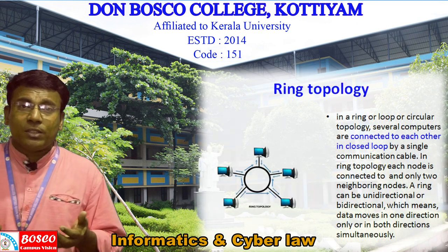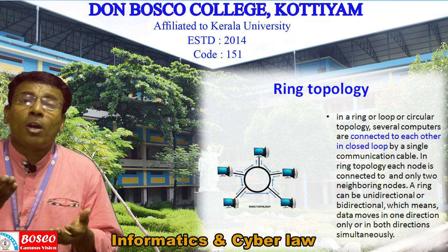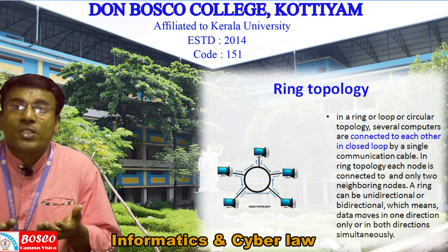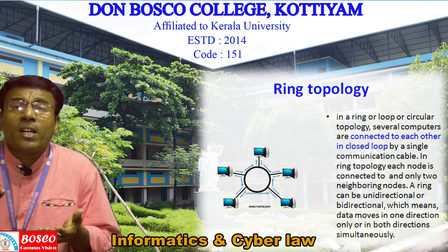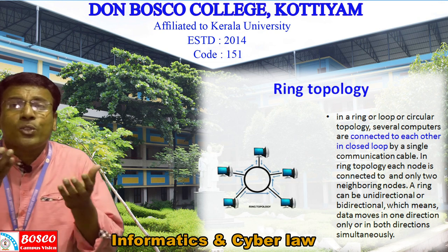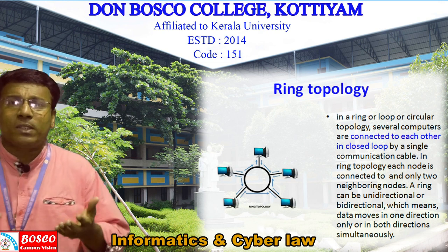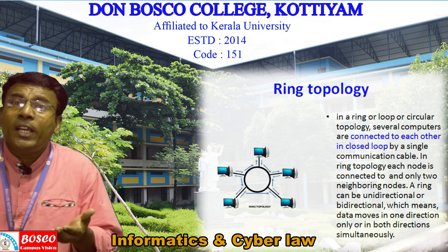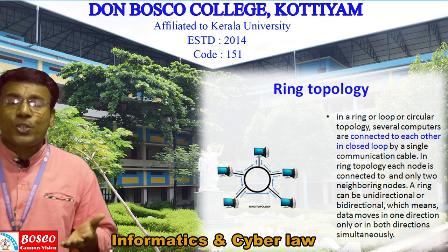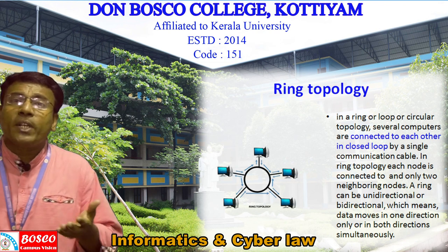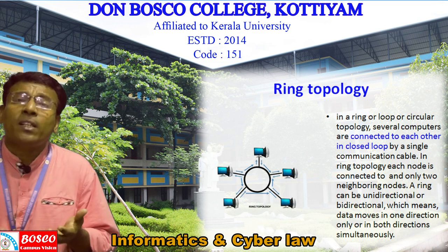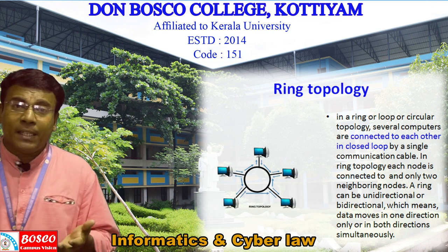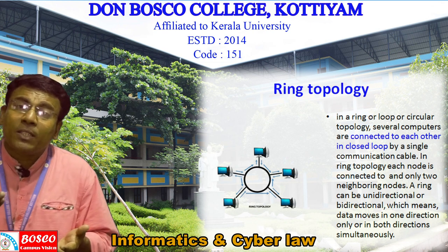In a ring topology, as seen in the diagram, the network takes the form of a ring. Several computers are connected to each other in a closed loop by a single communication cable. Each node is connected to two neighboring nodes, and communication can be either unidirectional or bidirectional — unidirectional meaning communication takes place in only one direction.